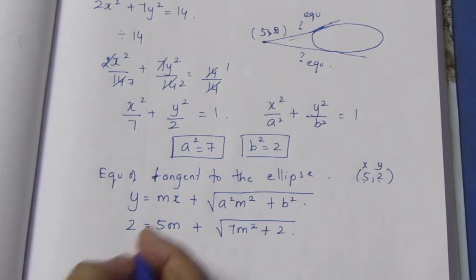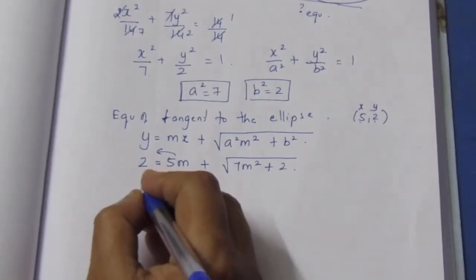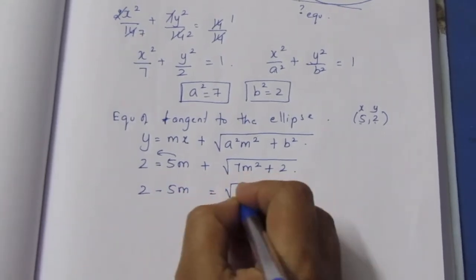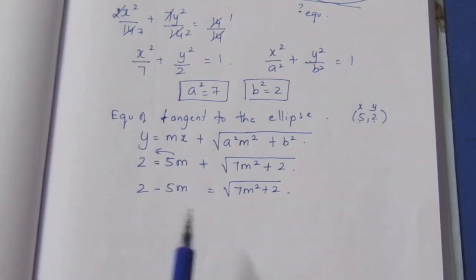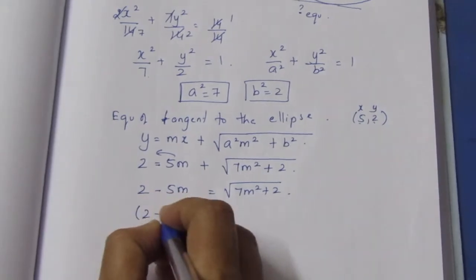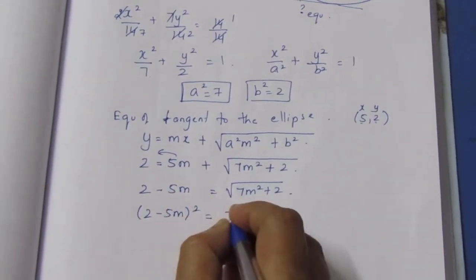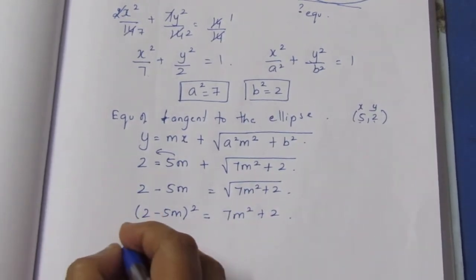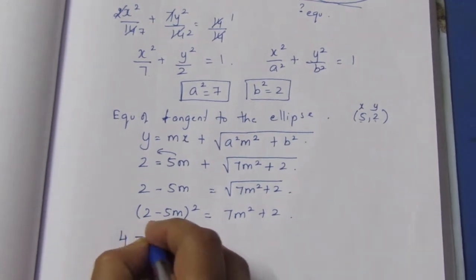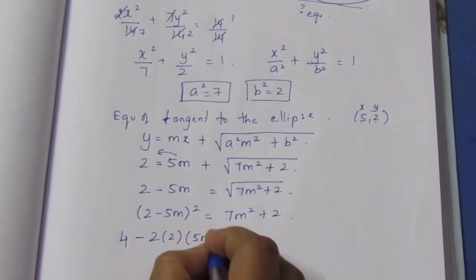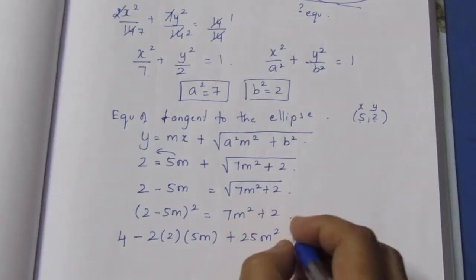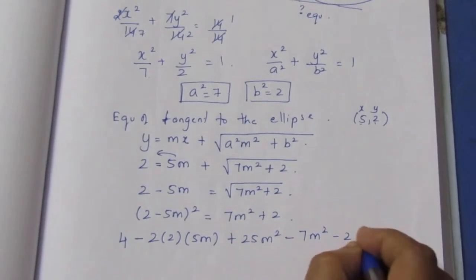Rearranging, 2 minus 5m equals √(7m² + 2). Squaring both sides to remove the root: (2 - 5m)² = 7m² + 2. Expanding the left side using the (a-b)² formula: 4 - 2×2×5m + 25m² = 7m² + 2. So 4 - 20m + 25m² - 7m² - 2 = 0.